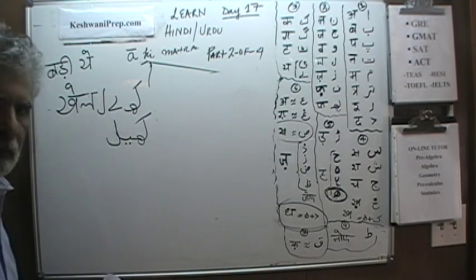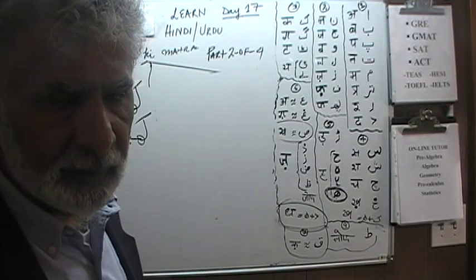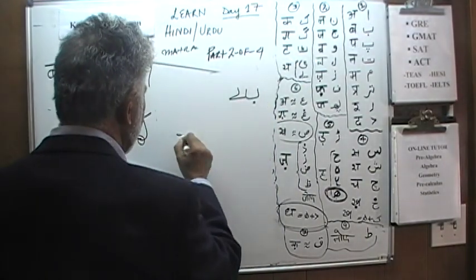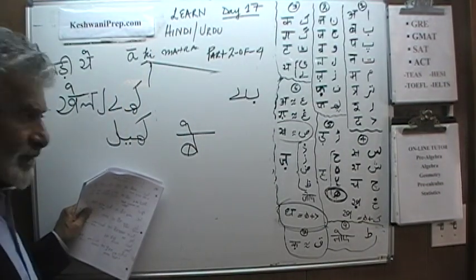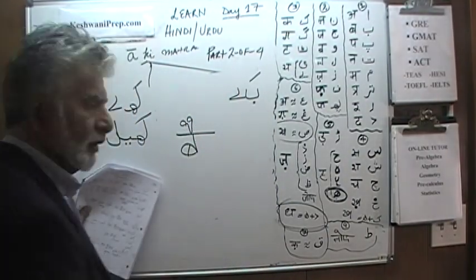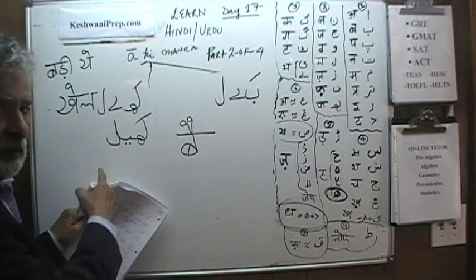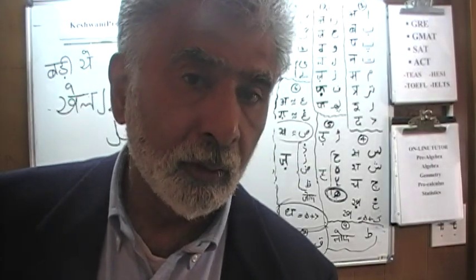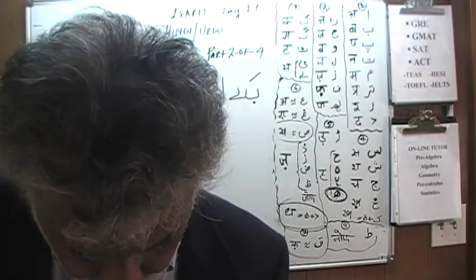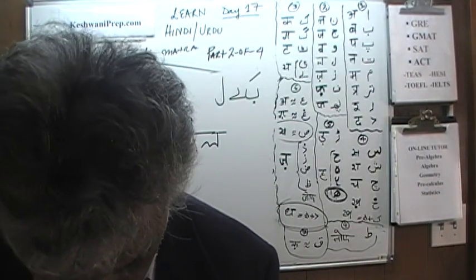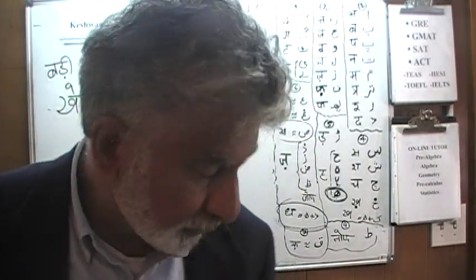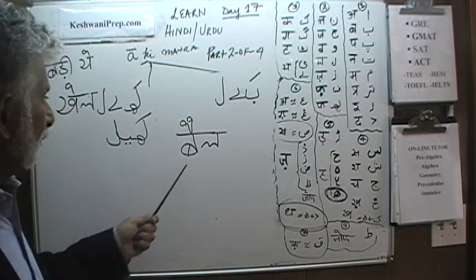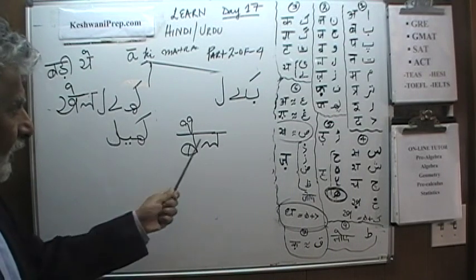Contrast the short A ki matra in 'kheel' with the Badi A ki matra: 'kheel' has Choti A, while 'bale' has Badi A ki matra with a Zubber, requiring two of them — B, then Badi Yeh with Zubber, then L: 'bale.' You can clearly hear the difference: 'kheel' has a very short A sound, while 'bale' is much longer. 'Bale' is an animal used in farming — like an ox — used to pull your cart when plowing the field.